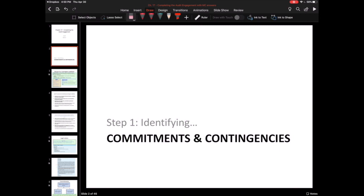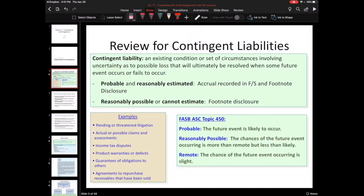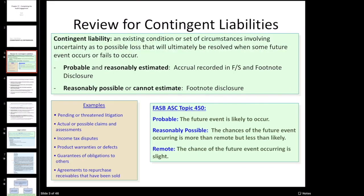Step one is identifying commitments and contingencies. Starting with contingent liabilities - this slide is intended to review what a contingent liability is, when we would disclose it, and when we would actually recognize and record the liability. If it is at least reasonably possible, you are supposed to disclose it. If it is also estimable, you record the liability and a related expense in the financial statements, and of course disclose it as well.